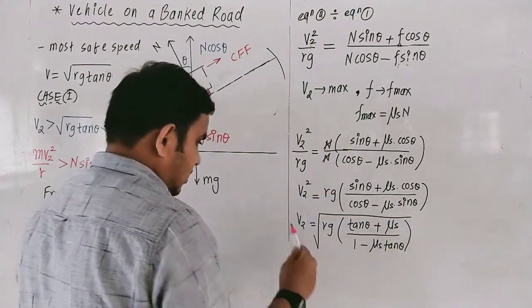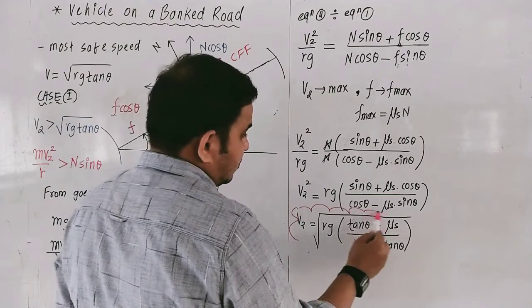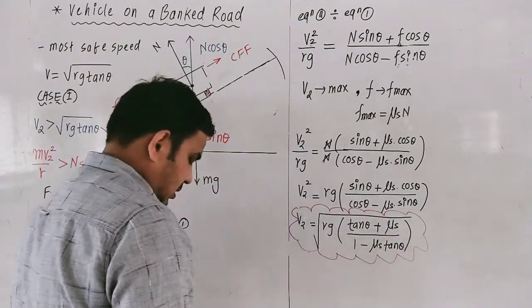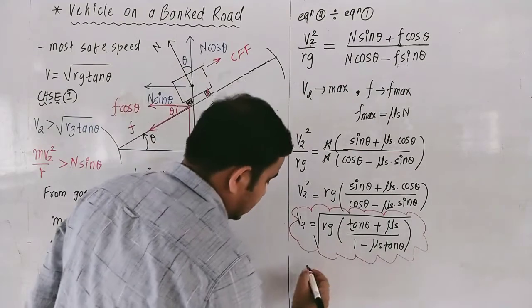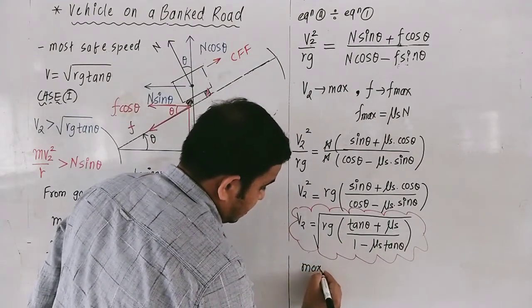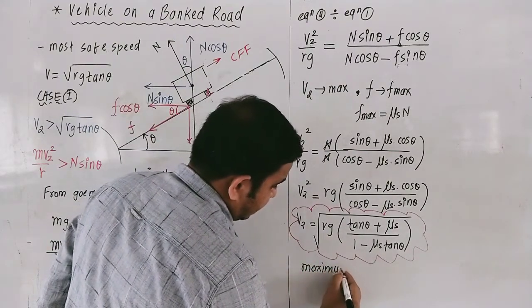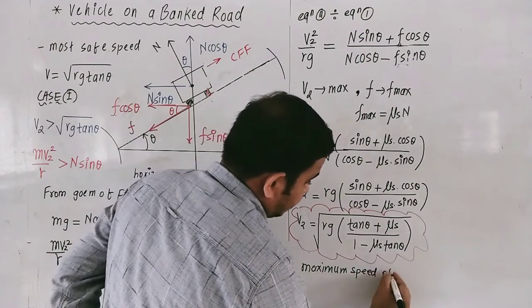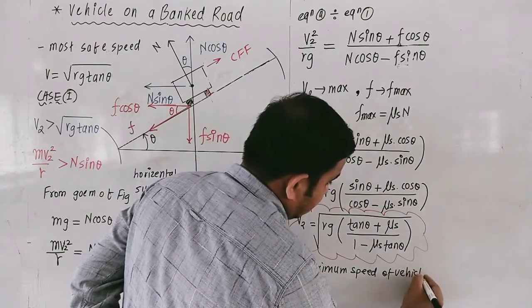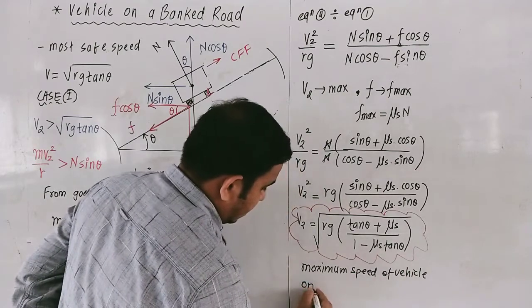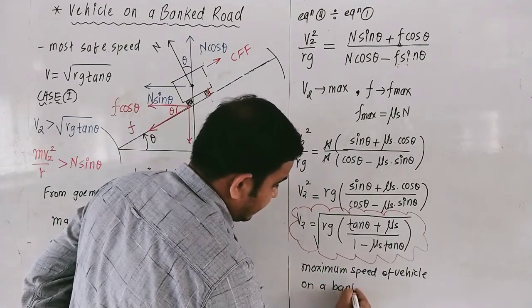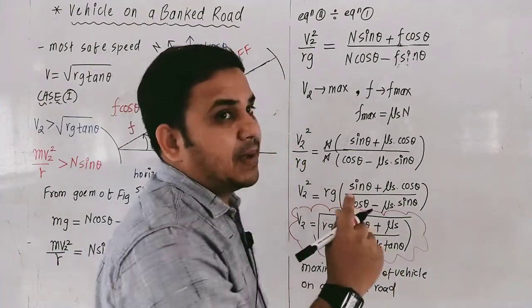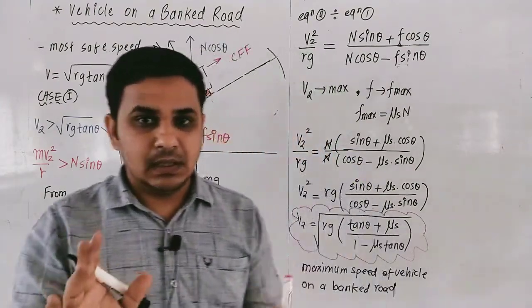Dividing numerator and denominator by cos theta, V2 equals the square root of rg times (tan theta plus mu-s) divided by (1 minus mu-s·tan theta). This is the expression for the maximum speed of a vehicle on a banked curved road. The difference from the minimum speed formula is just the sign — plus in the numerator and minus in the denominator for maximum speed.